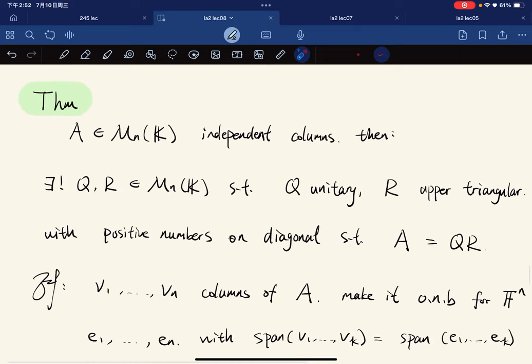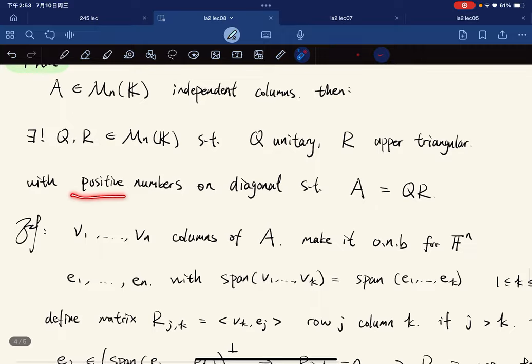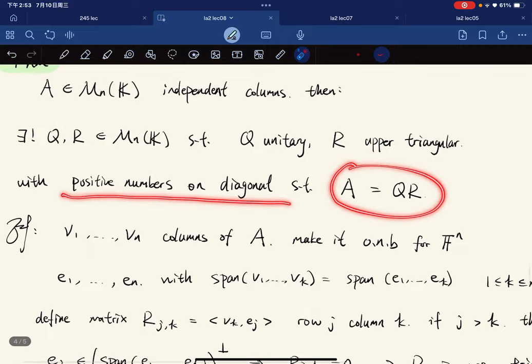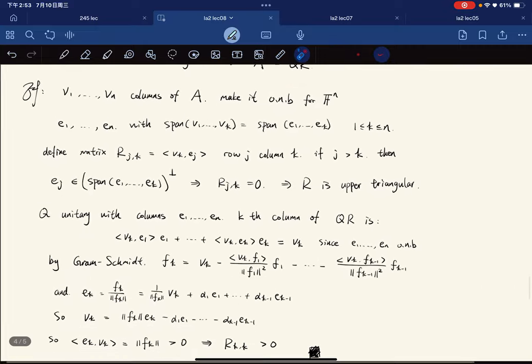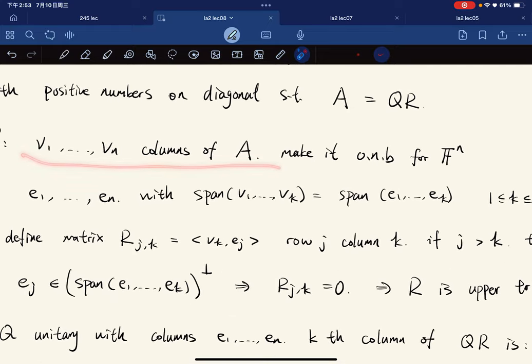Here's the theorem of QR factorization. Let A be a matrix with independent columns, so basically invertible. There exist matrices Q and R where Q is unitary, R is upper triangular with positive numbers on the diagonal, such that A equals QR. The proof is really by Gram-Schmidt.